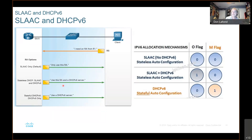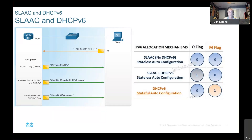Some of it is going to be created automatically — for example, the address may be created automatically by the device — but go out and get the domain and the DNS server from the DHCP server to get that information. That's what the other flag set means — other information is gotten, but not all of it.